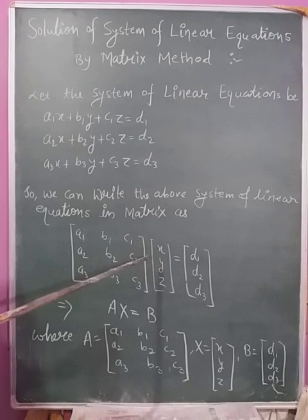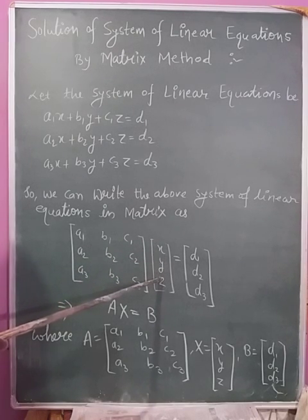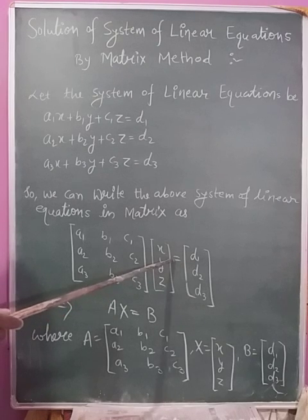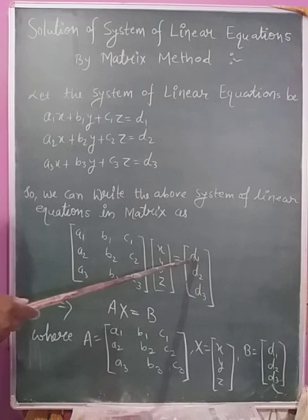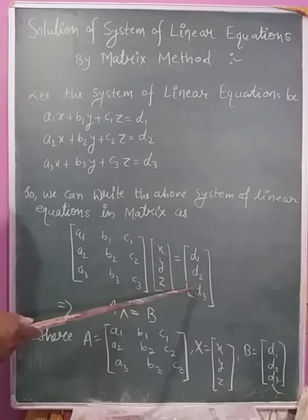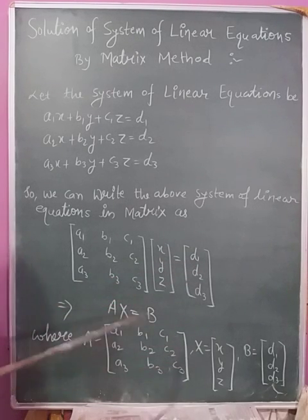With the variables x, y, z written as a column matrix, equal to the right side constants d1, d2, d3 as a column matrix.